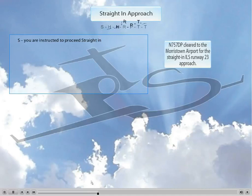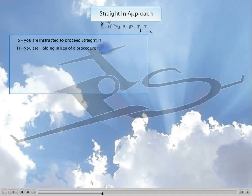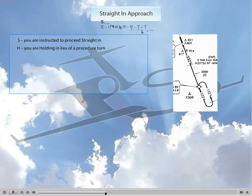Obviously, you're going to have to be quite aligned with the final approach course. The H stands for Holding in lieu. Sometimes, like shown here in the figure, you would be holding, and once the controller says cleared for the approach, your next leg inbound, you would proceed straight in for the approach.